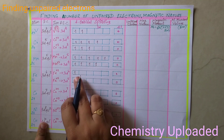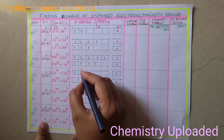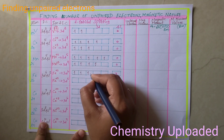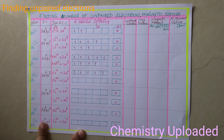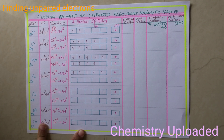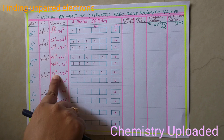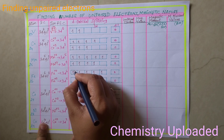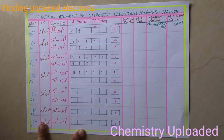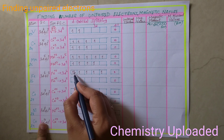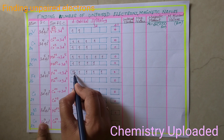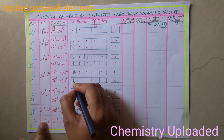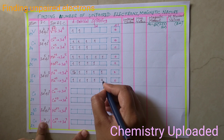For d6, first fill all 5 orbitals singly — 1 electron in each. Now there is 1 excess electron (the 6th electron for Fe2+). That 6th electron fills the first orbital, so pairing takes place there. Represent the excess electron in a downward symbol. So d5 has all 5 orbitals with single electrons.